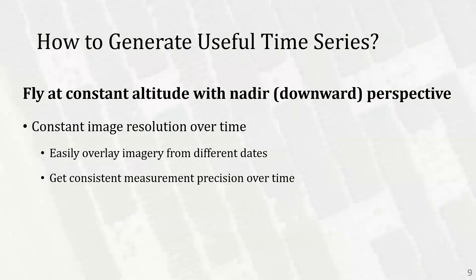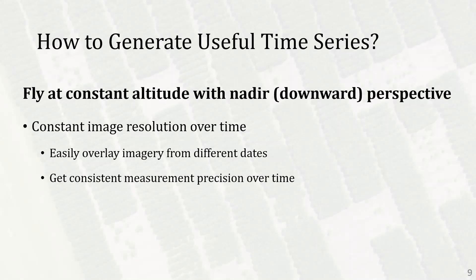So how do we generate a useful image time series? First, you really want to try to fly at a constant altitude over time and with the camera at nadir, or downward perspective. This ensures you'll get pretty constant image resolution over time, making it easier to overlay images from different dates and get consistent measurement precision, which will keep your analysis simpler.